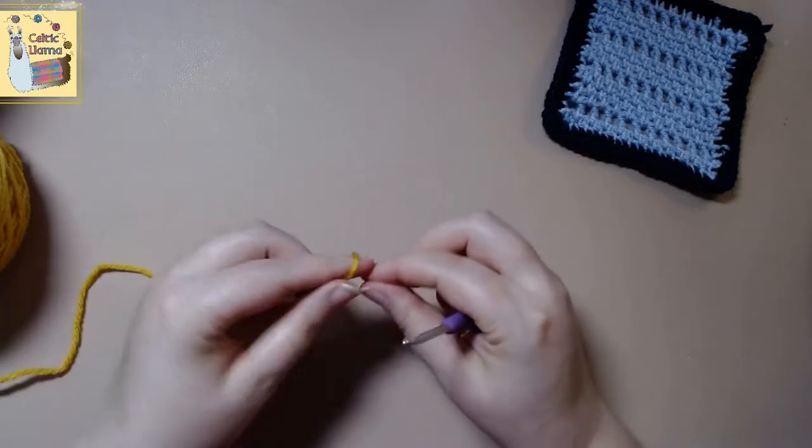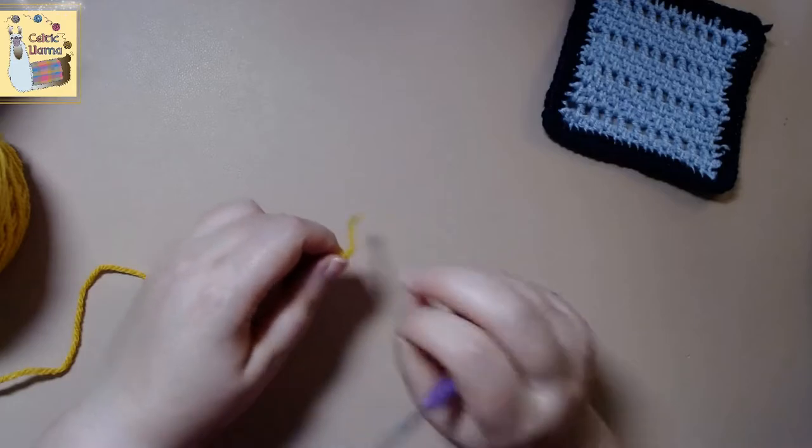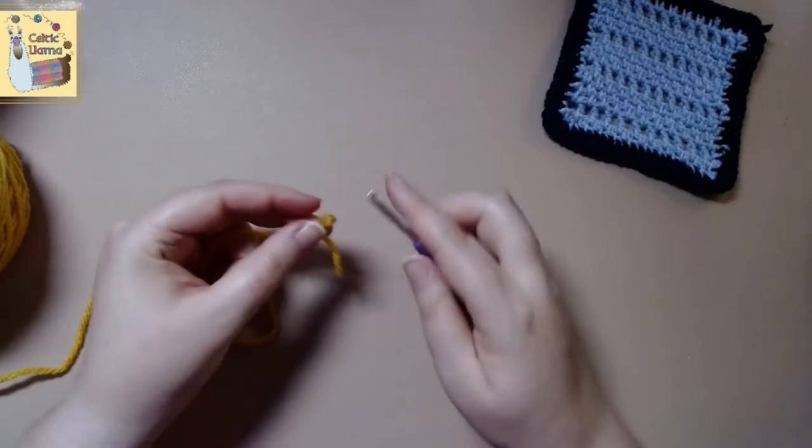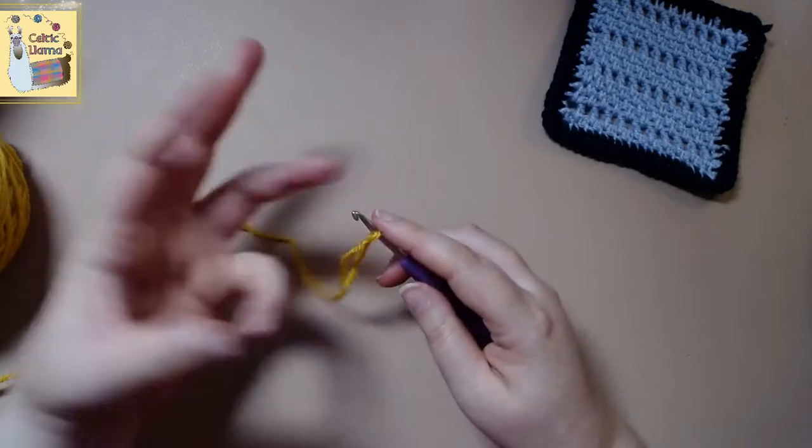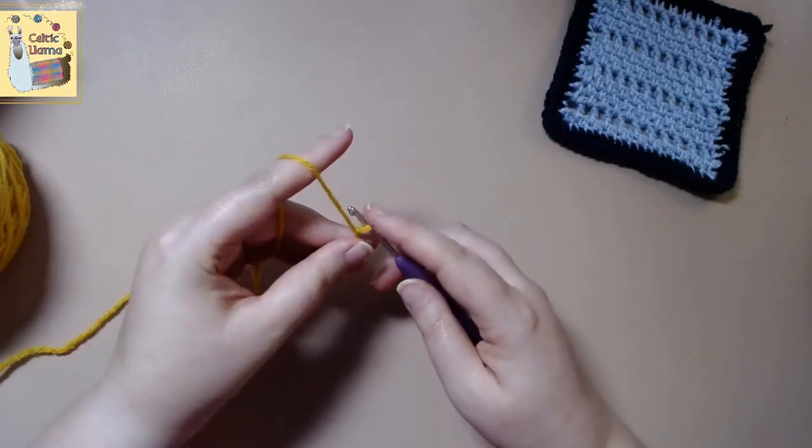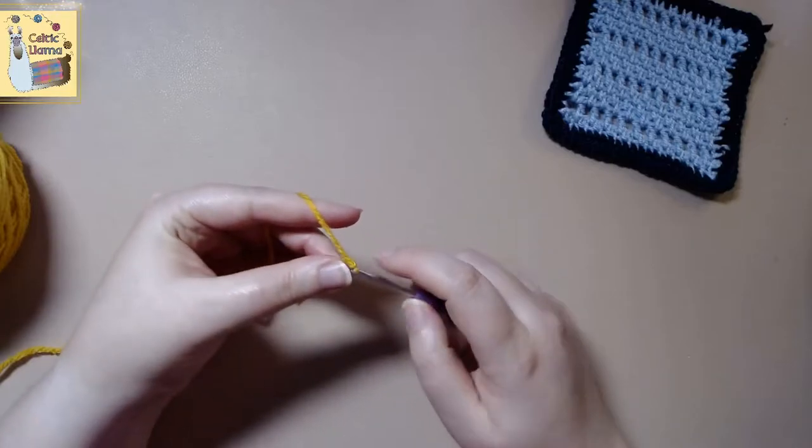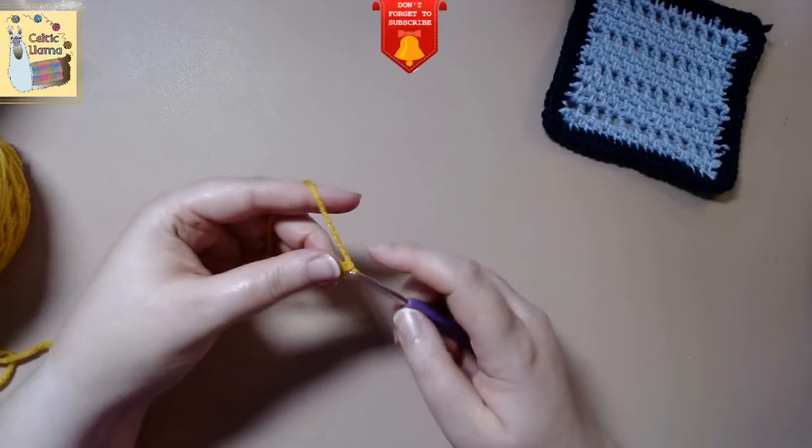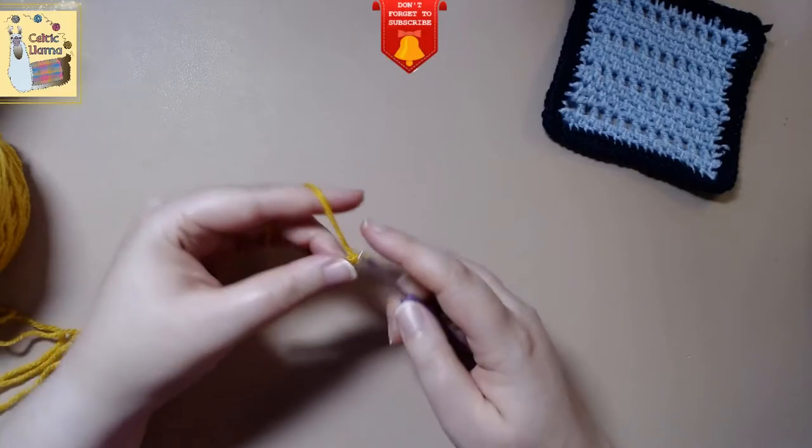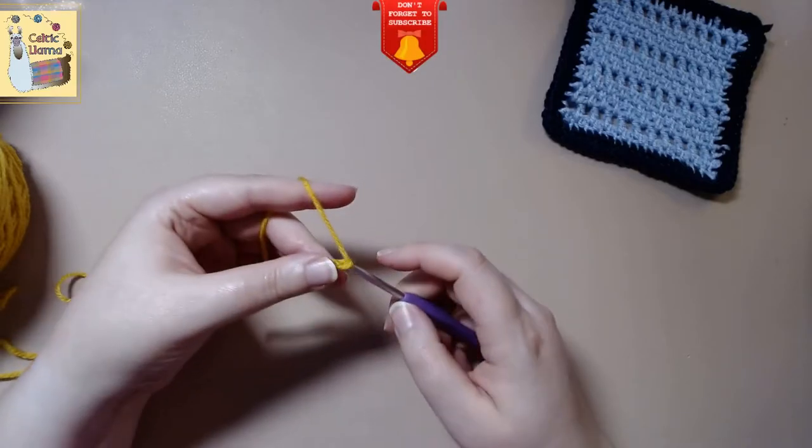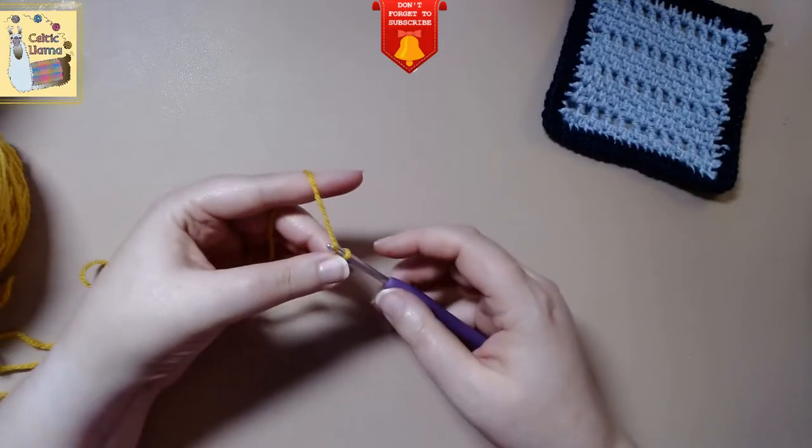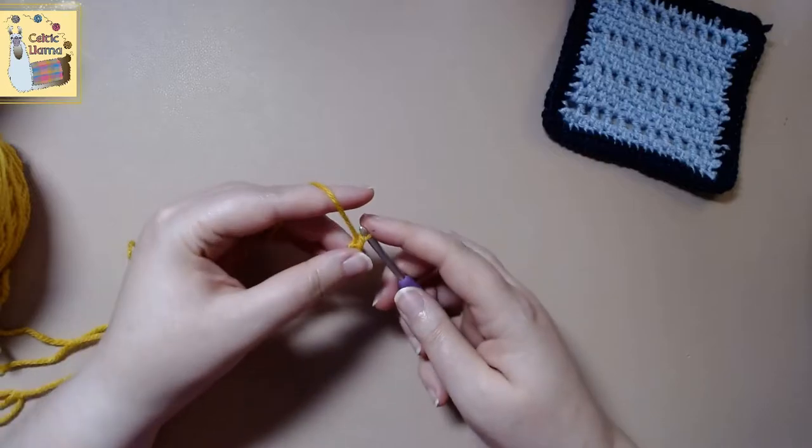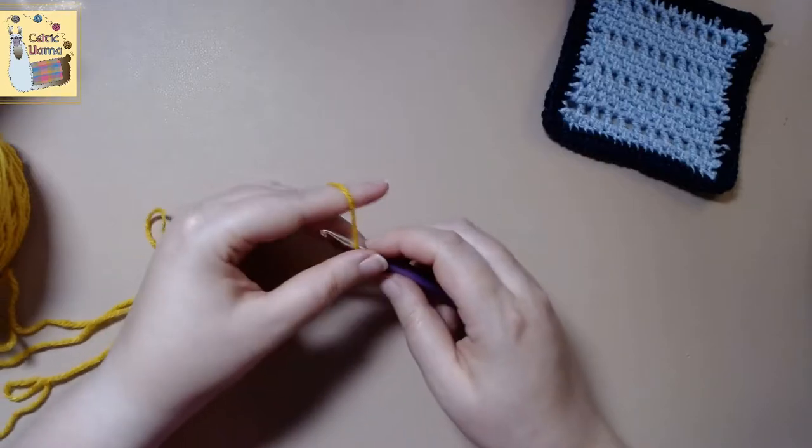So to get started you're going to want to do multiples of two plus one. So for this tutorial I am just going to do ten chains plus my one at the end, so eleven total. Alright we have our ten plus one, so we got our eleven.